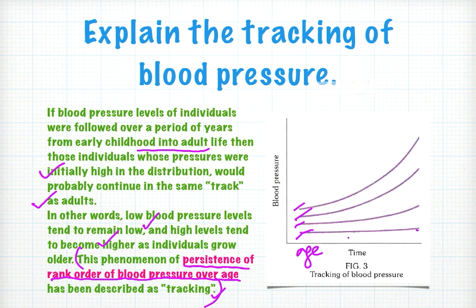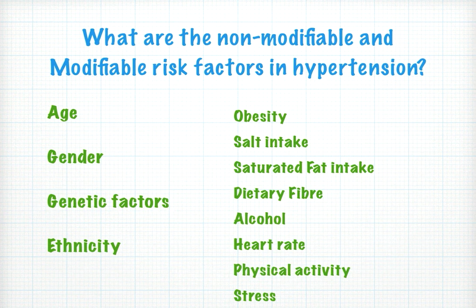So over time, the lower blood pressure remains lower and the higher one increases, maintaining the rank order. This phenomenon is called tracking, or the persistence of rank order of blood pressure.